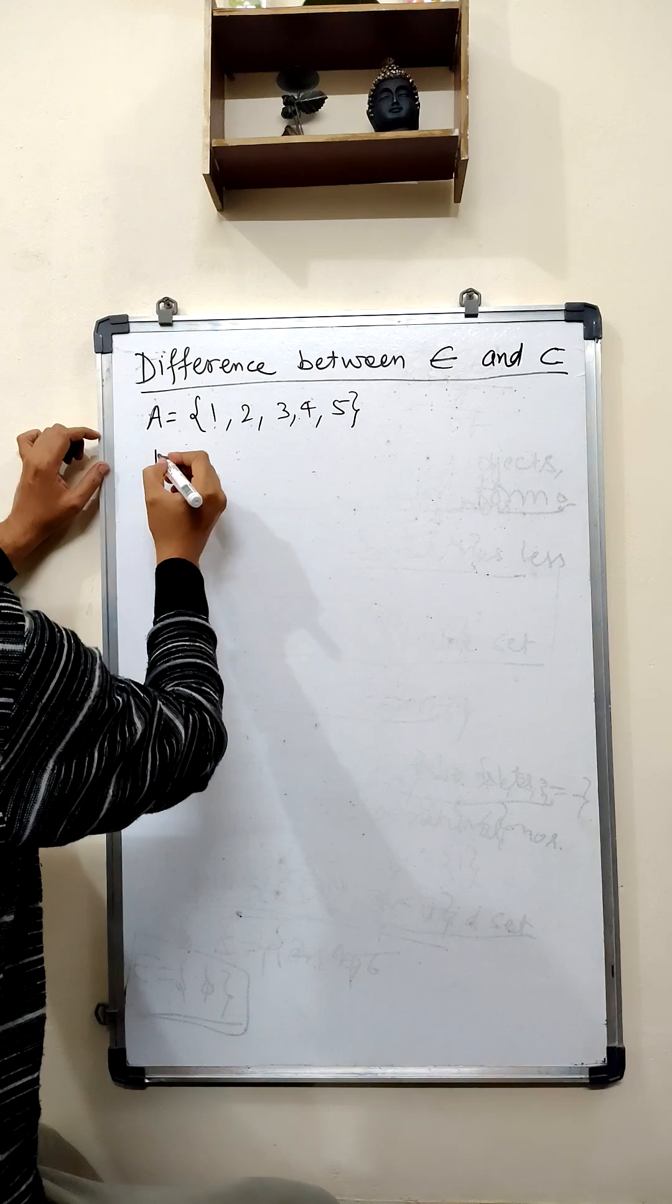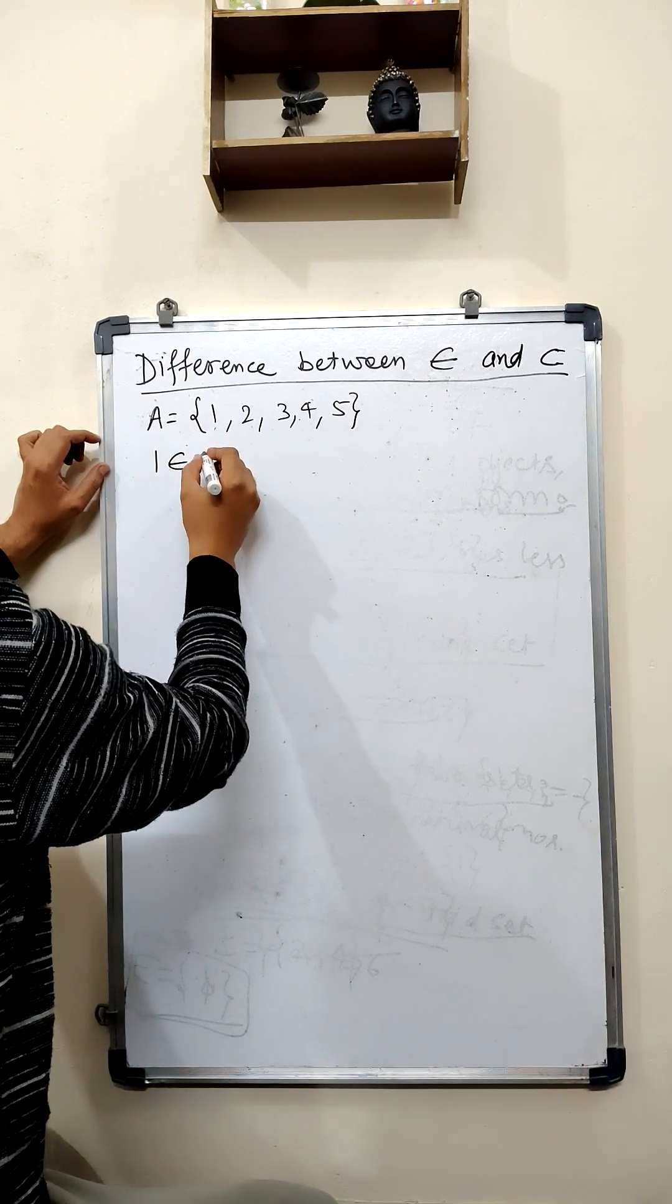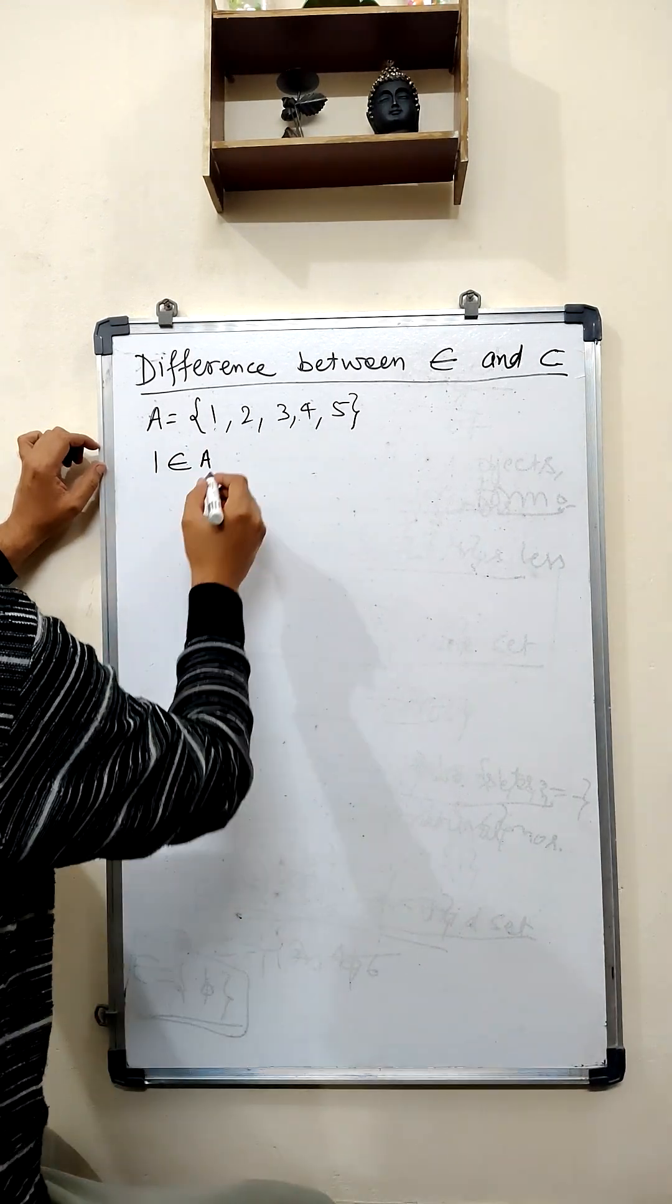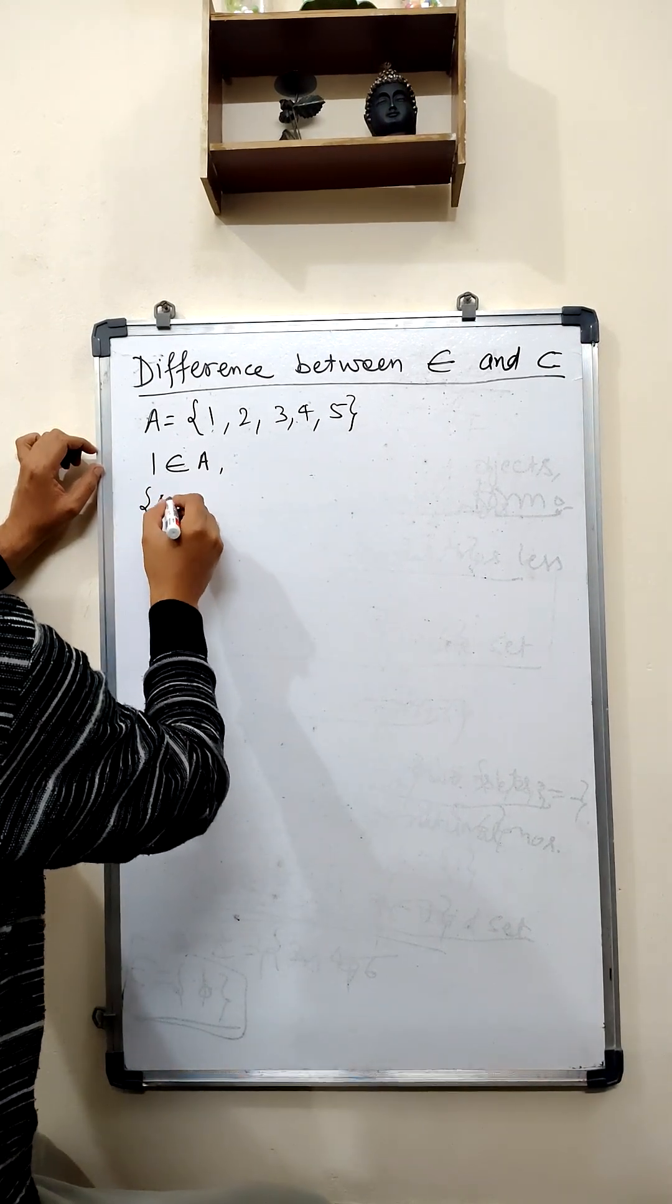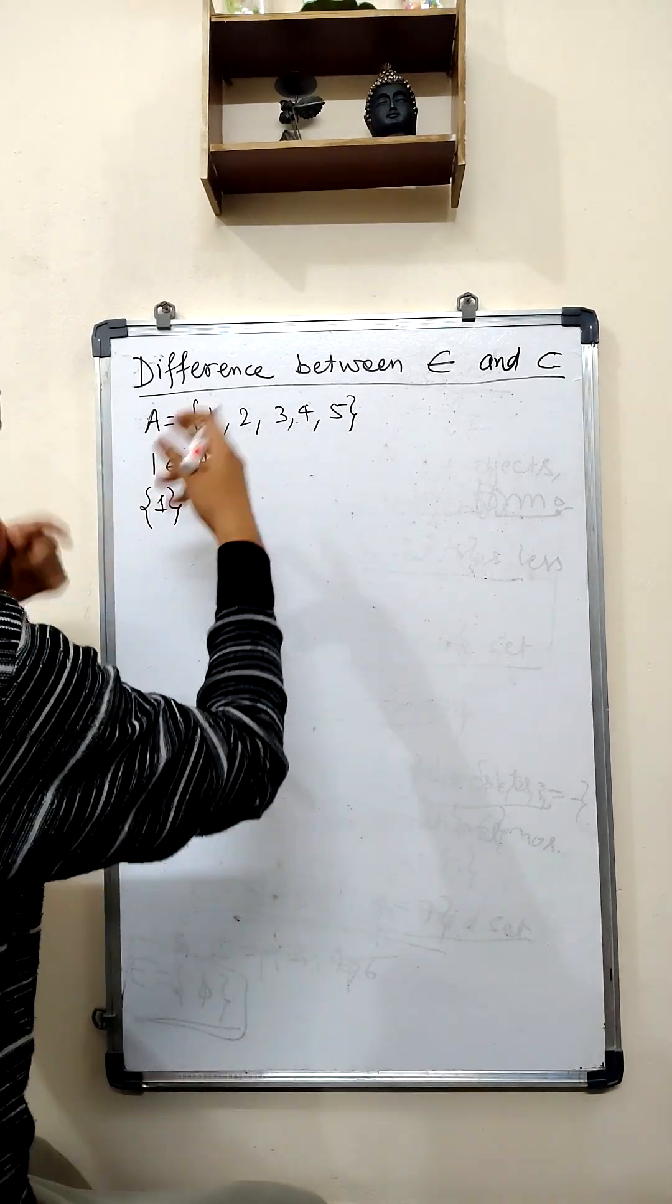So 1 is an element of A, we can write it. And if we write this, then 1 will become a subset, as we have discussed in the previous short.